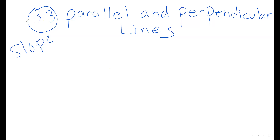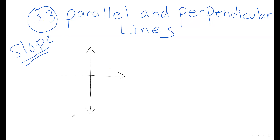The third thing we're going to learn in 3.3 is the characteristics of parallel and perpendicular lines, particularly around their slopes. We'll look at what makes parallel and perpendicular lines different and what their slopes look like.